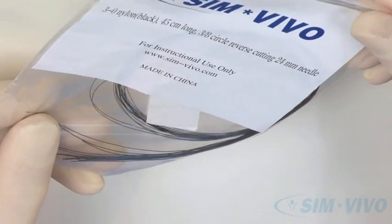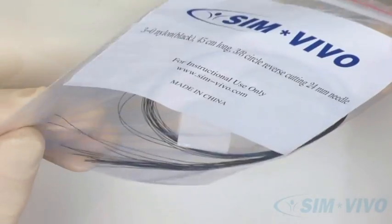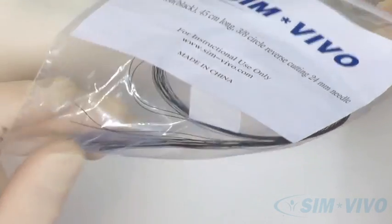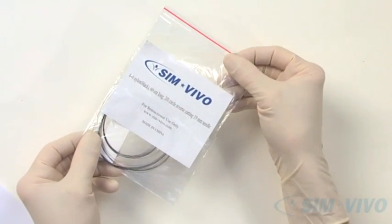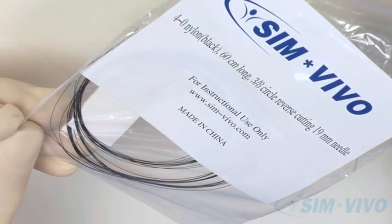Another bag contains a 3-0 nylon with a 24 mm curved reverse cutting needle, which is a needle commonly used to close lacerations and incisions. The final bag contains a 4-0 nylon with a 19 mm reverse cutting needle, which will be used for practicing subcuticular closure.